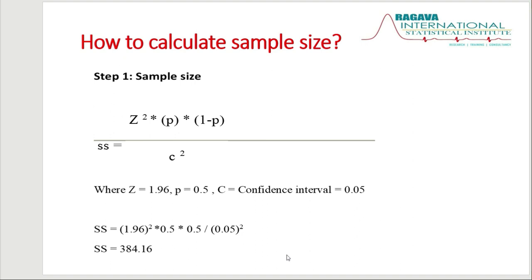But if you want to calculate sample size, which method should we use — JCI standard, NABH standard, or the statistical method? The correct answer is the statistical method, because it is a scientific approach. The other standards like JCI or NABH are mostly hypothetical. So if you want to calculate sample size, always use the statistical formula, because only then can you get more accurate results.